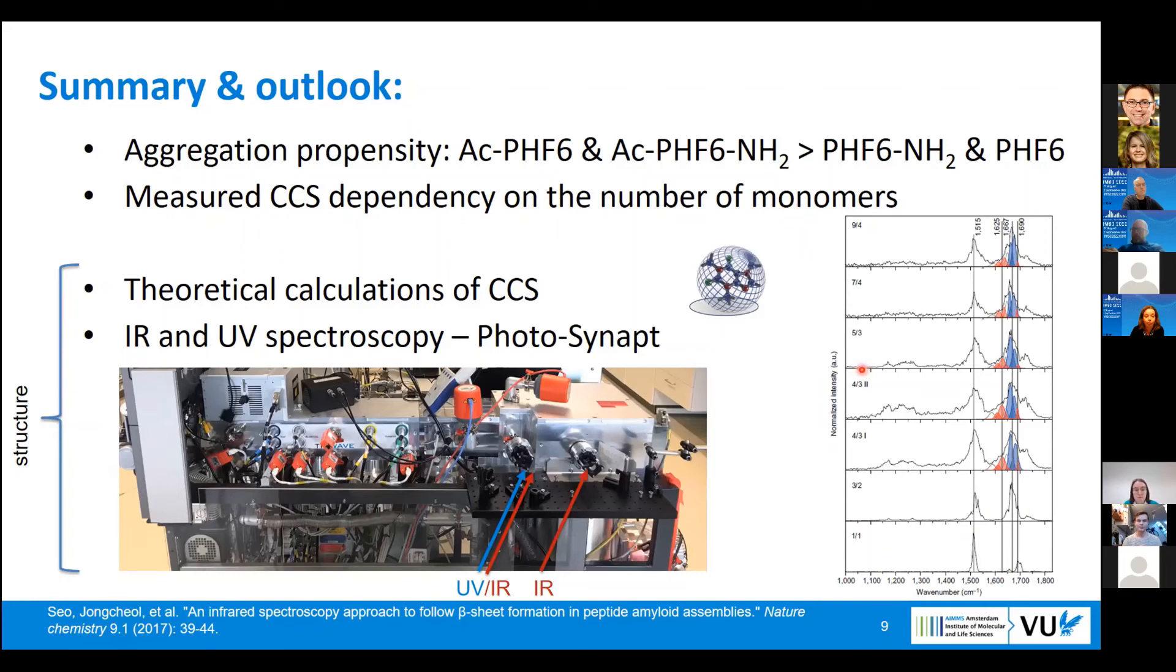With infrared spectroscopy, we can follow the spectroscopic features of beta sheets that are formed during aggregation. For example, here I show this graph where we have more peaks in the spectrum starting to appear that correspond to beta sheets. In order to do that, we developed in our lab a new setup for the SYNAPT that has optical access.